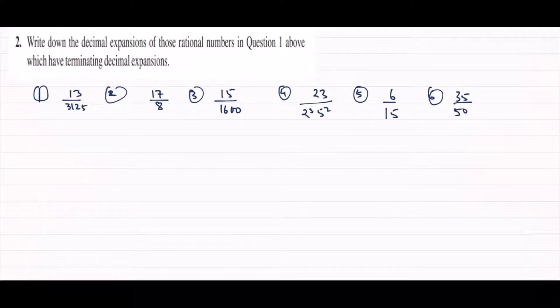Hello students. Today we will do question number 2. Question number 2 says: write down the decimal expansion of those natural numbers in question 1 above which have terminating decimal expansion. We have done question 1 in previous videos. We have to find the decimal expansion of the terminated ones. There are a total of 6 numbers and we have to do their decimal expansion.